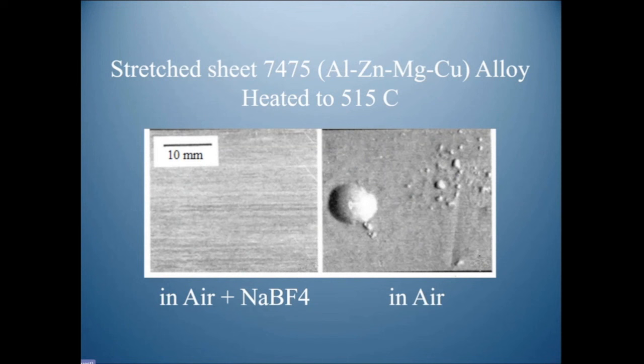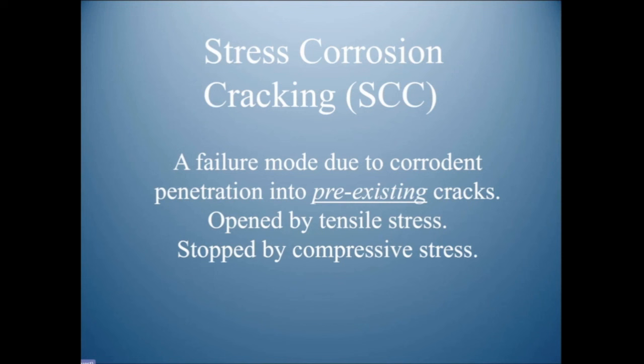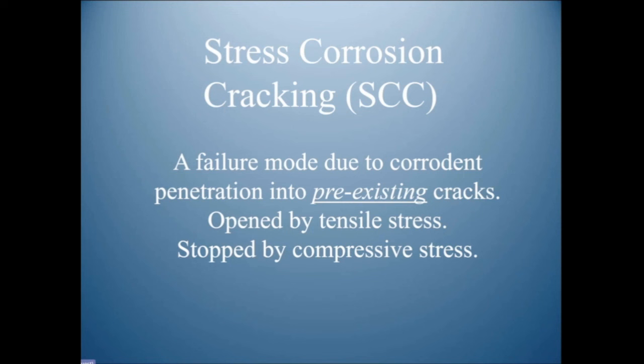Knowing that bifilms are present throughout steel, we can predict things like hydrogen embrittlement, the arrival of blisters — this is aluminium but the same happens in steels — and stress corrosion cracking. Stress corrosion cracking happens because the cracks are already there, and when you apply a slight tensile stress the cracks open a little and are easily penetrated by corrosive species.